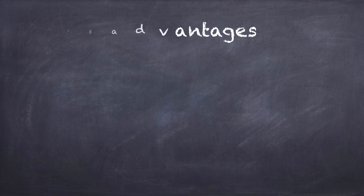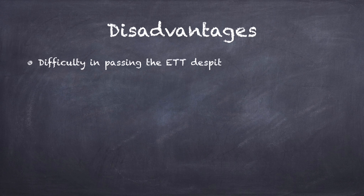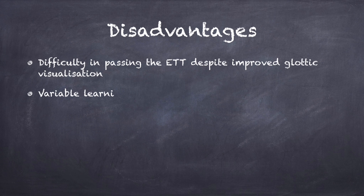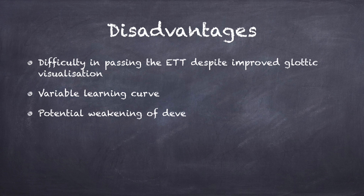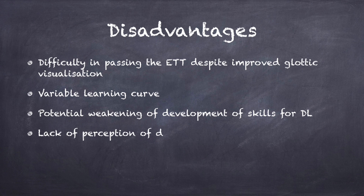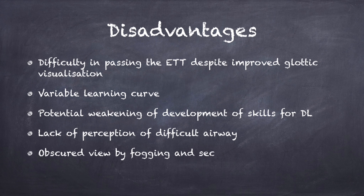Disadvantages of video laryngoscopy include difficulty in passing the ET tube despite improved glottic visualization, a variable learning curve, a potential risk of weakening the development of direct laryngoscopy skills, lack of perception of a difficult airway situation, and obscured view due to fogging and secretions on the camera lens.